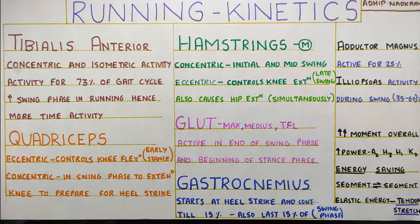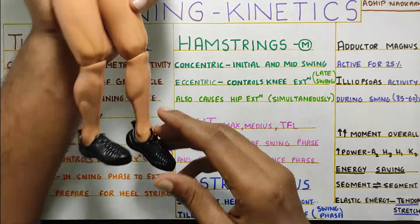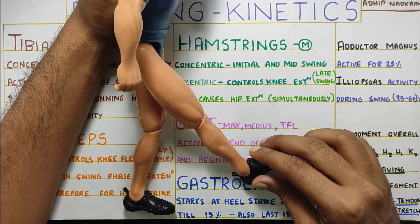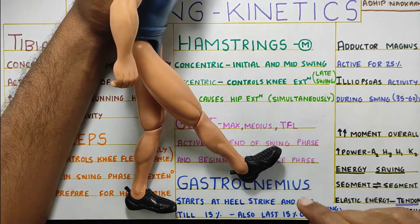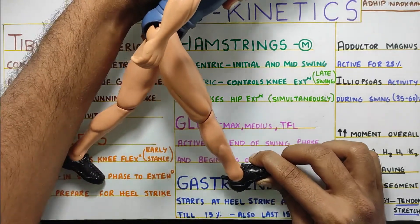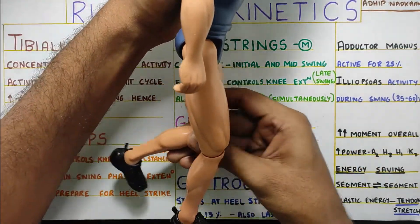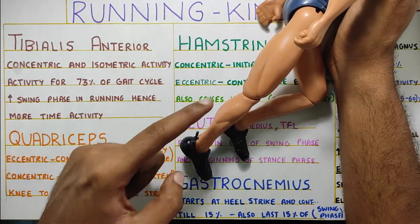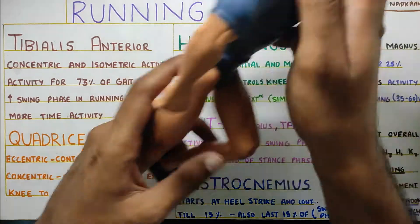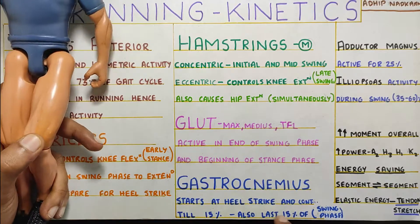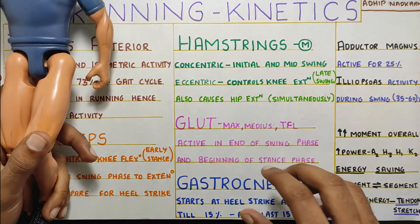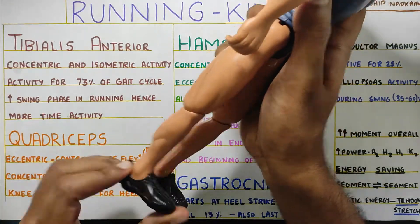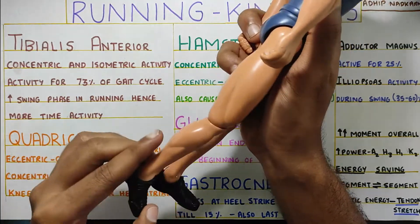Now let's move on to the gastrocnemius. What happens is it starts at heel strike — when your heel strike is happening, gastrocnemius activity will start and it will be continued till you are doing toe off. That is, from stance phase you are pushing off from the ground. During the toe off, your gastrocnemius will be acting — during the first 15% and also the last 15% of the swing phase, your gastrocnemius will be active. Basically it covers your stance phase and the pushing off, which is done by your gastrocnemius through plantar flexion.